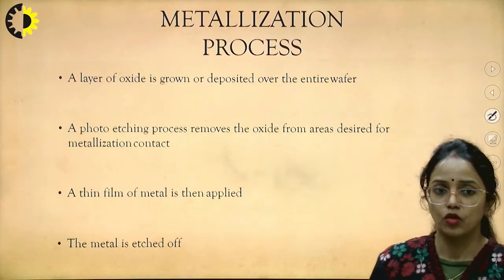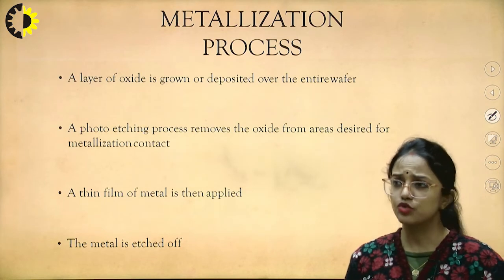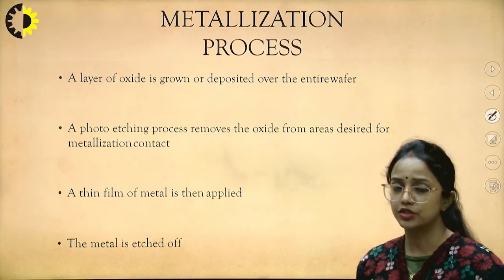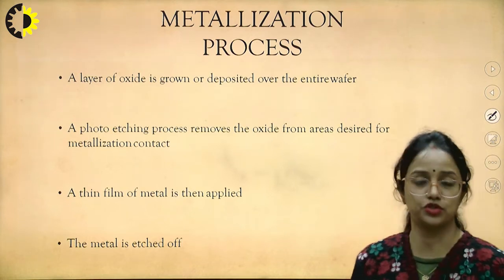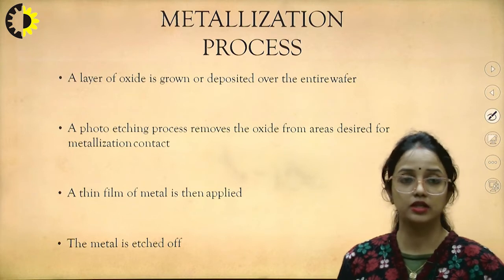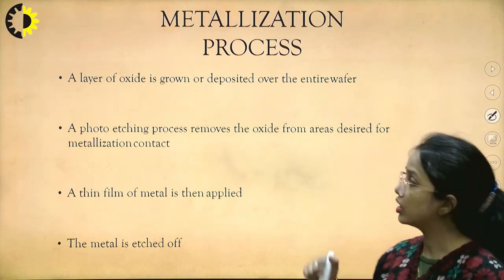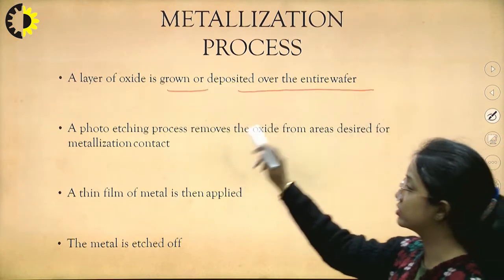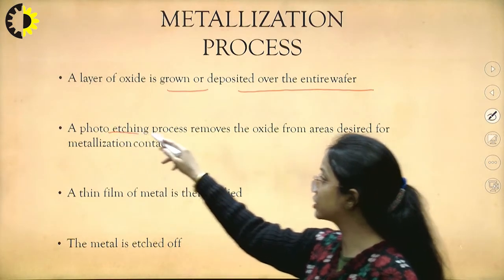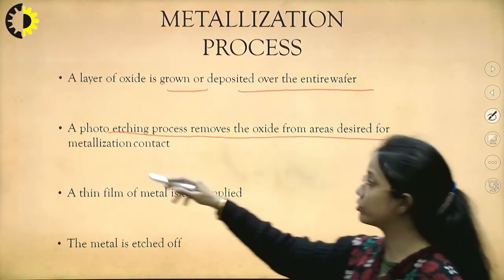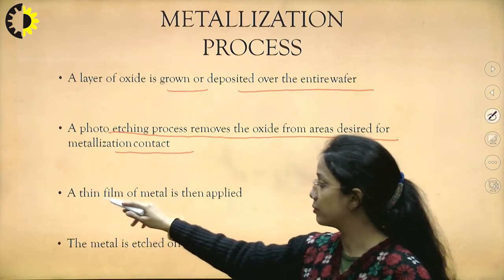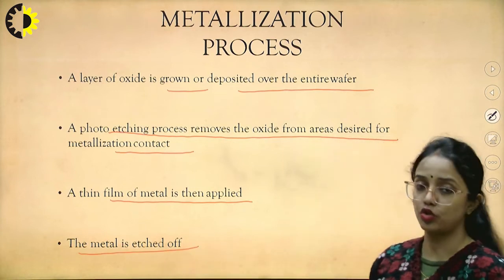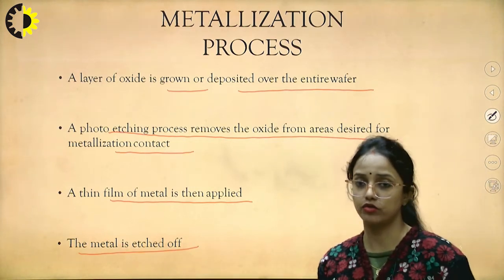What is actually the process? When we introduce metallization, we are actually making some deposition — depositing aluminum. A layer of oxide is grown or deposited over the entire wafer, and then a photo-etching process removes the oxide from the areas desired for metallization contact. A thin film of metal is then applied, and the remaining unwanted metal is etched off.